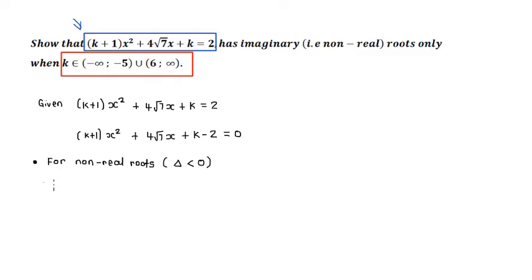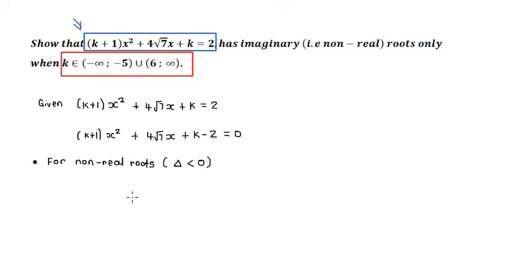So what we're going to do is find the discriminant — and because we have these K's, it's going to be in terms of K — and then set that discriminant less than zero. We're now moving away from simple rearrangement algebra and into the section of inequalities.